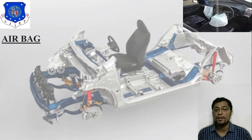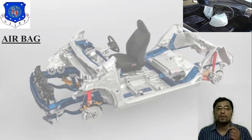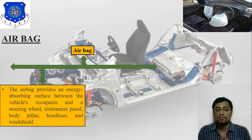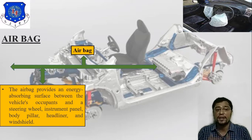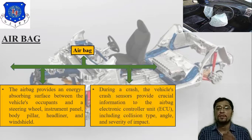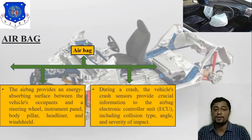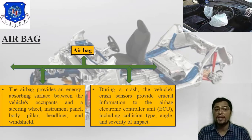Next is the airbag. The airbag is placed near the steering system. The airbag provides an energy-absorbing surface between the vehicle's occupant and the steering wheel, instrument panel, body pillar, headliner, and windshield. During a collision, the vehicle's crash sensor provides crucial information to the airbag's electronic control unit, including collision type, angle, and impact severity. The airbag is generally provided near the steering system.